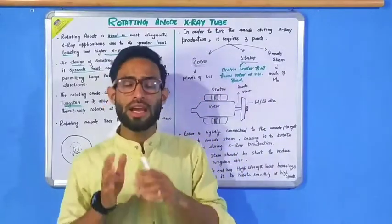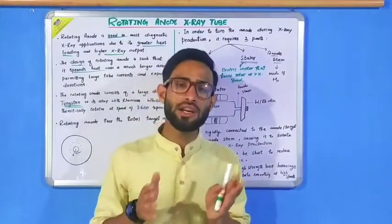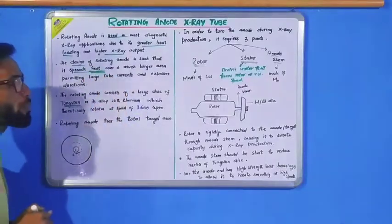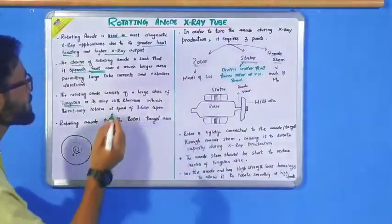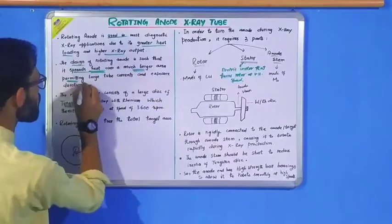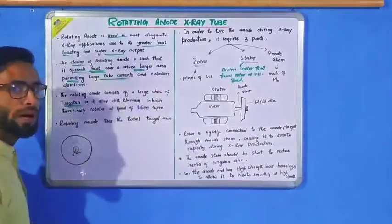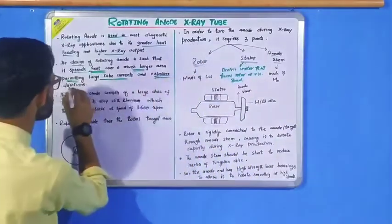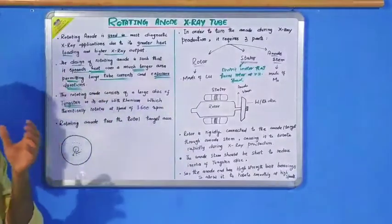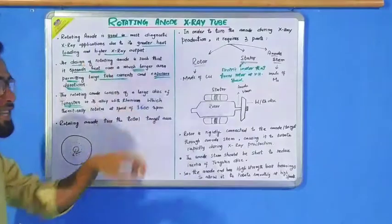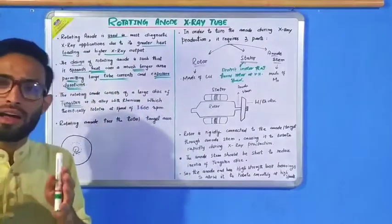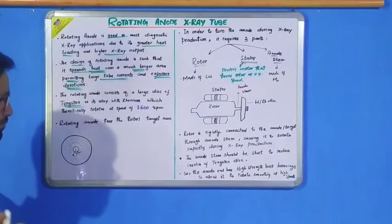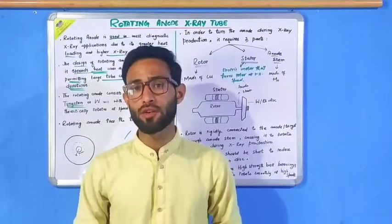The design of the rotating anode is such that it spreads heat over a large area, permitting large tube currents and longer exposure durations. This design is what makes the rotating anode x-ray tube so effective.